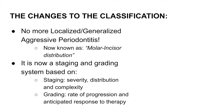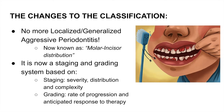So first of all, the changes to the classification. There is no more localized or generalized aggressive periodontitis — well, it's there, but now it's just known as molar and incisor distribution. It is now a staging and grading system: staging is based on severity, distribution, and complexity, while grading is based on rate of progression and anticipated response to therapy. It's a little confusing right now, but we'll get to it right away.